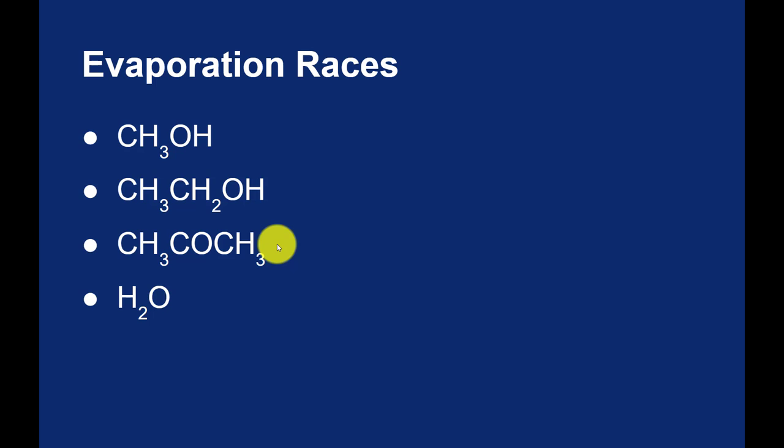So acetone will evaporate much faster than the two alcohols. Water has two hydrogen bonding sites, it has two separate OH bonds, so even though it's the smallest molecule of the four, it has the strongest intermolecular forces, so it evaporates the slowest. So if we were to look at the vapor pressure, the pressure caused by the evaporating liquid, the acetone would evaporate the fastest and have the largest vapor pressure. The methanol would be second with the second highest vapor pressure, the ethanol would be third with the third highest vapor pressure, and water would be last because it has such strong intermolecular forces.